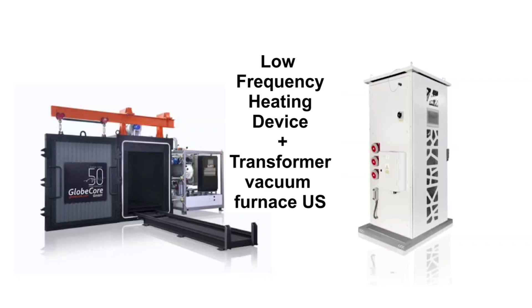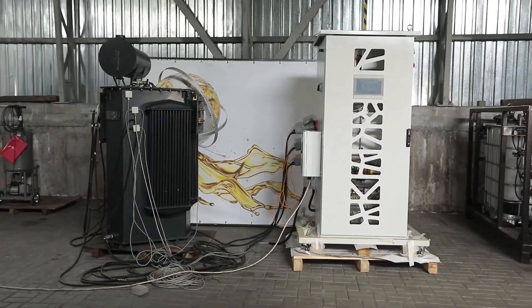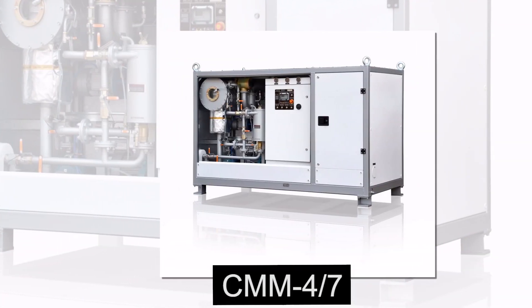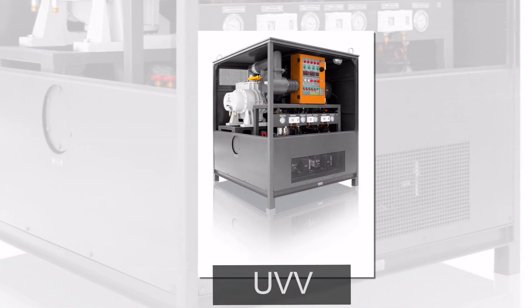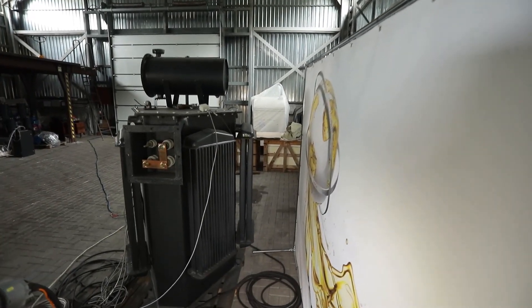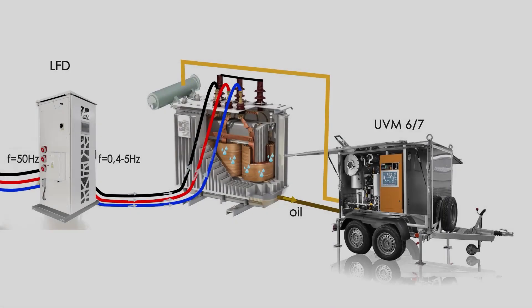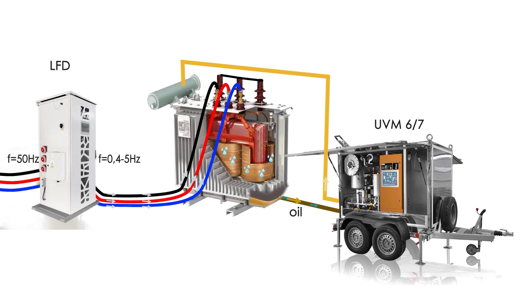When drying the windings of aged transformers, it is possible to use thermal vacuum drying or vacuum freezing of water vapor together with a low-frequency heating module simultaneously. This eliminates the need to pull the windings out of the transformer. During the heating of the windings, water passes from the paper insulation into oil, and the oil is removed using a thermal vacuum dryer.